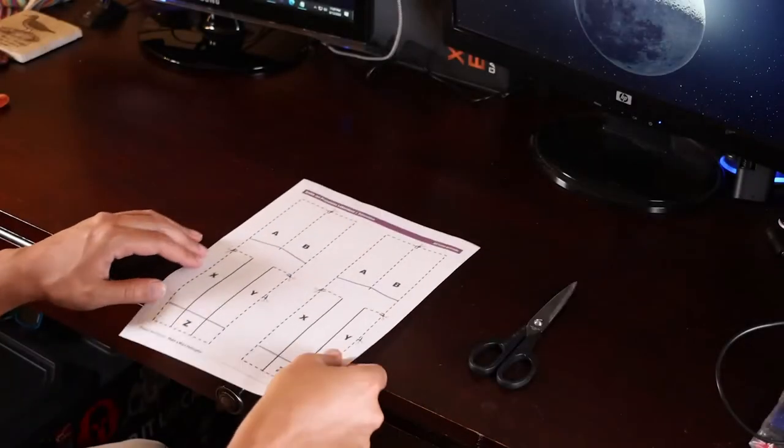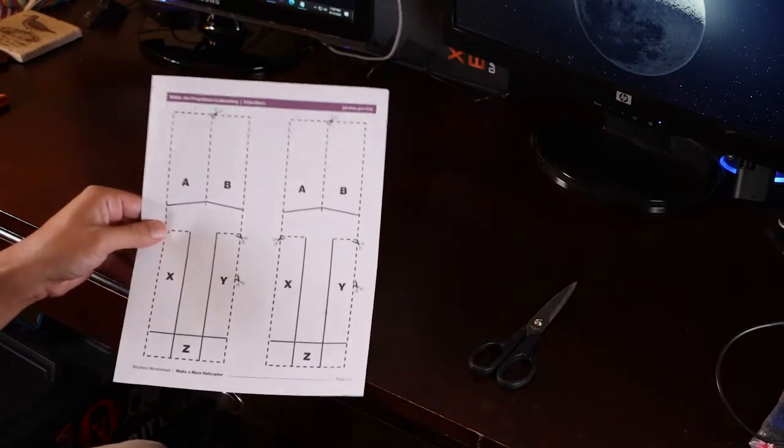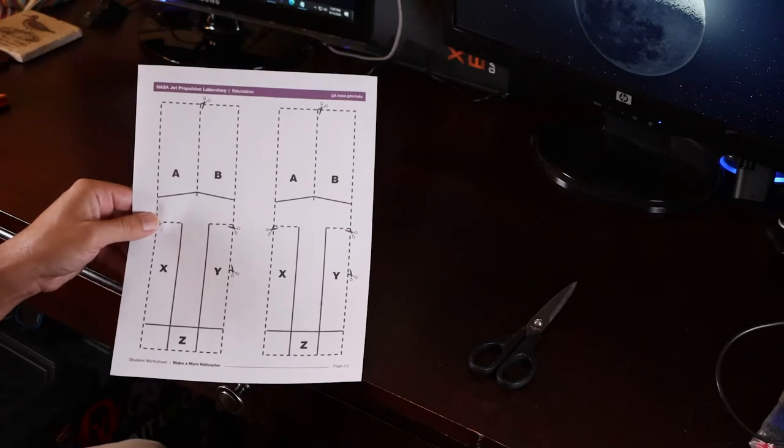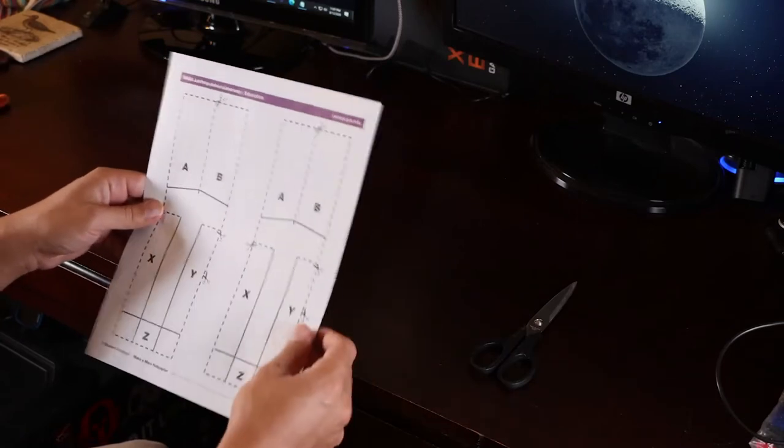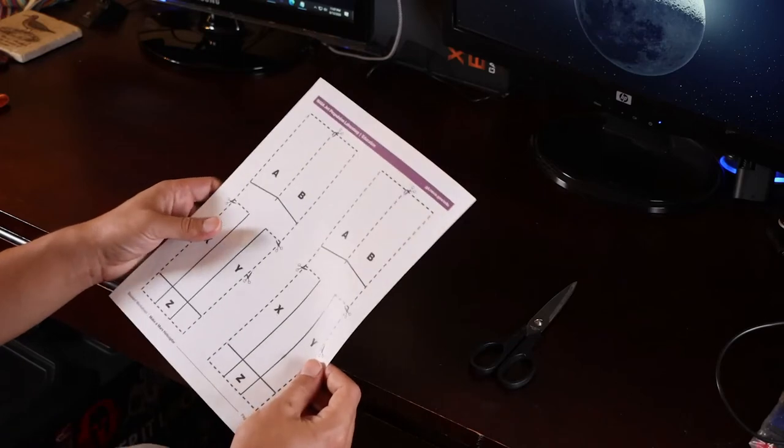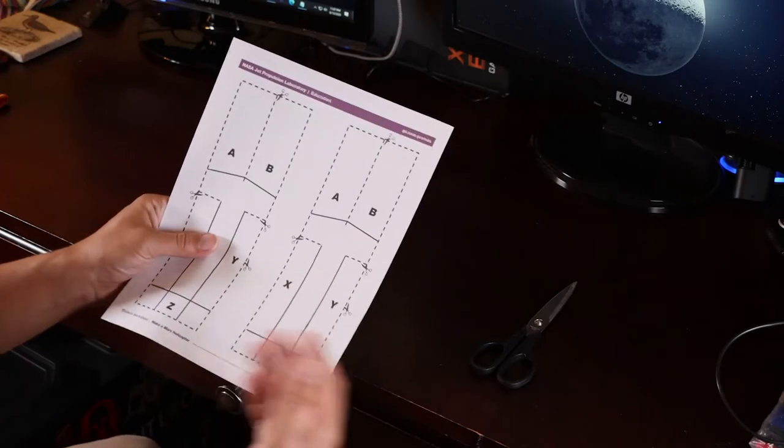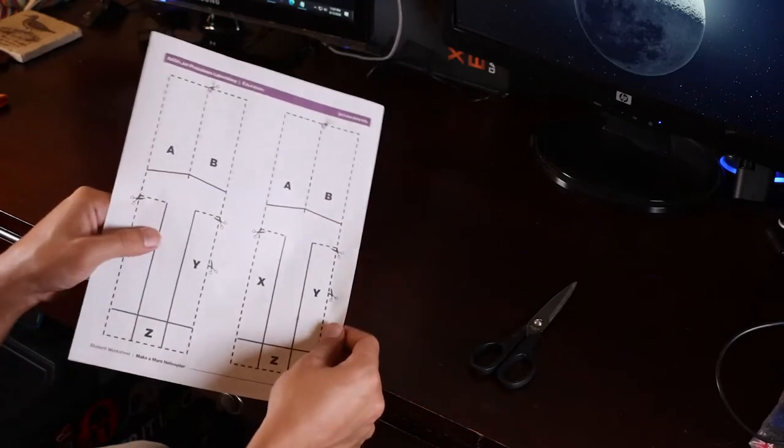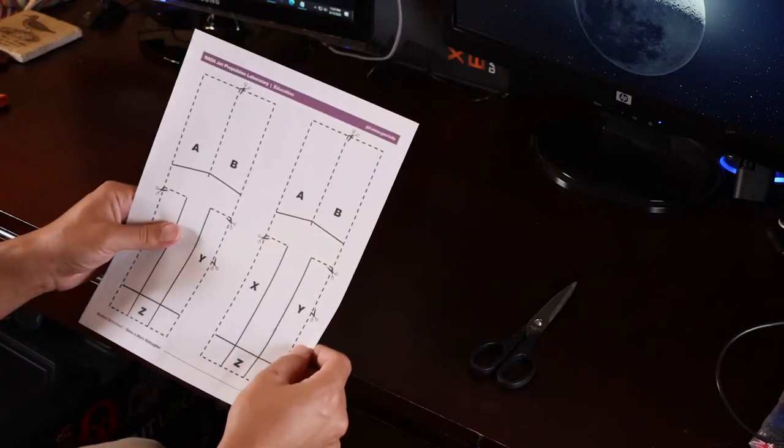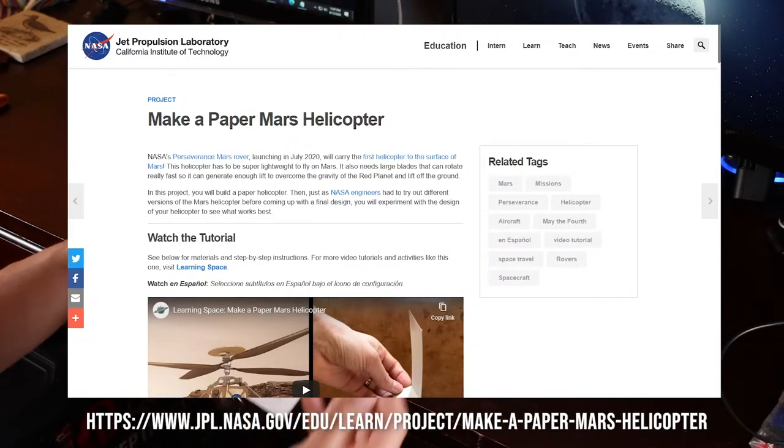All right, so let's try to build our NASA's Jet Propulsion Laboratory paper helicopter. This is an activity provided by them, and we can build this to celebrate National Aviation Day and also helicopter-type craft, since we've been talking about kind of drone rotorcraft in this video.